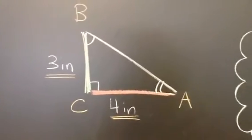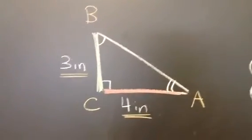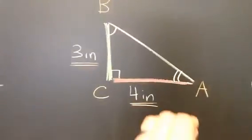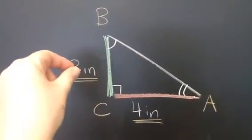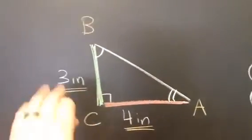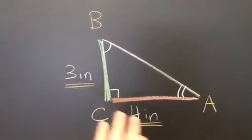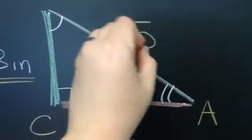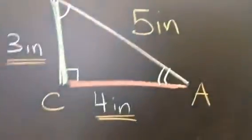Now, we're just going to use the Pythagorean theorem to figure out the hypotenuse. 4 squared plus 3 squared has to equal this squared. Well, 16 plus 9 is 25, and the square root of 25 is 5. So this is 5 inches.